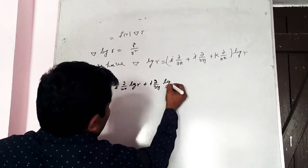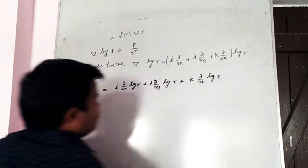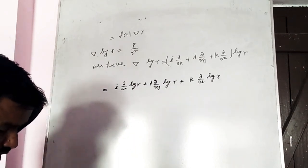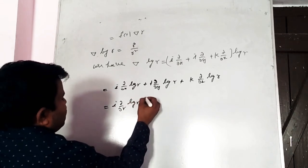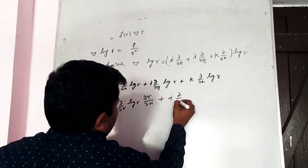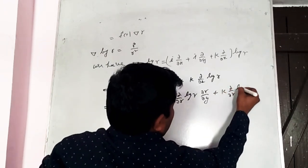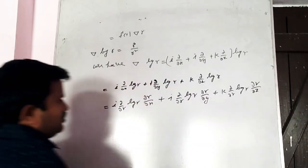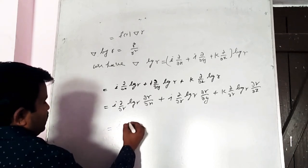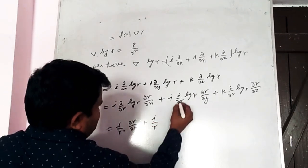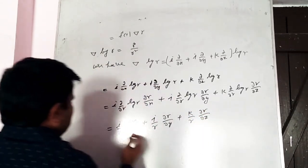= i ∂(log r)/∂x + j ∂(log r)/∂y + k ∂(log r)/∂z. Using chain rule: i·(1/r)·∂r/∂x + j·(1/r)·∂r/∂y + k·(1/r)·∂r/∂z. Taking 1/r common.